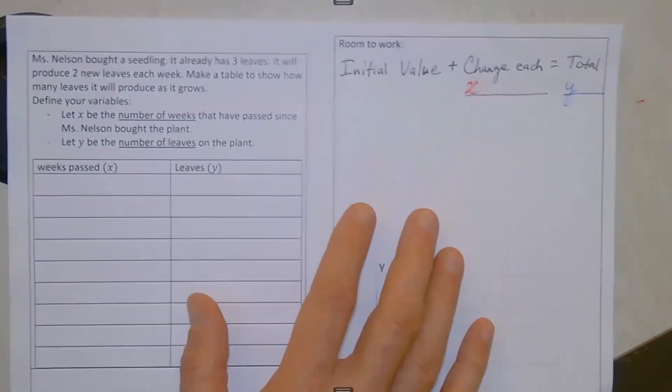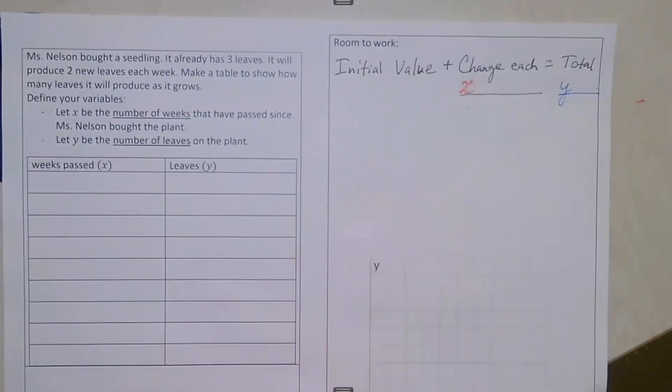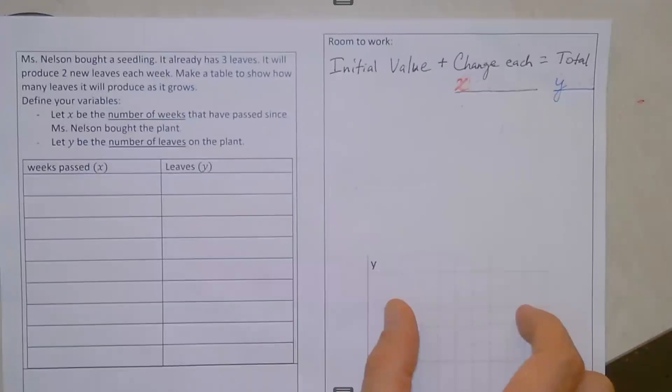So here's our example. Ms. Nelson bought a seedling. It already has three leaves. It will produce two new leaves each week. Make a table to show how many leaves it will produce as it grows. So we're going to make a table and translate that table over to the graph.